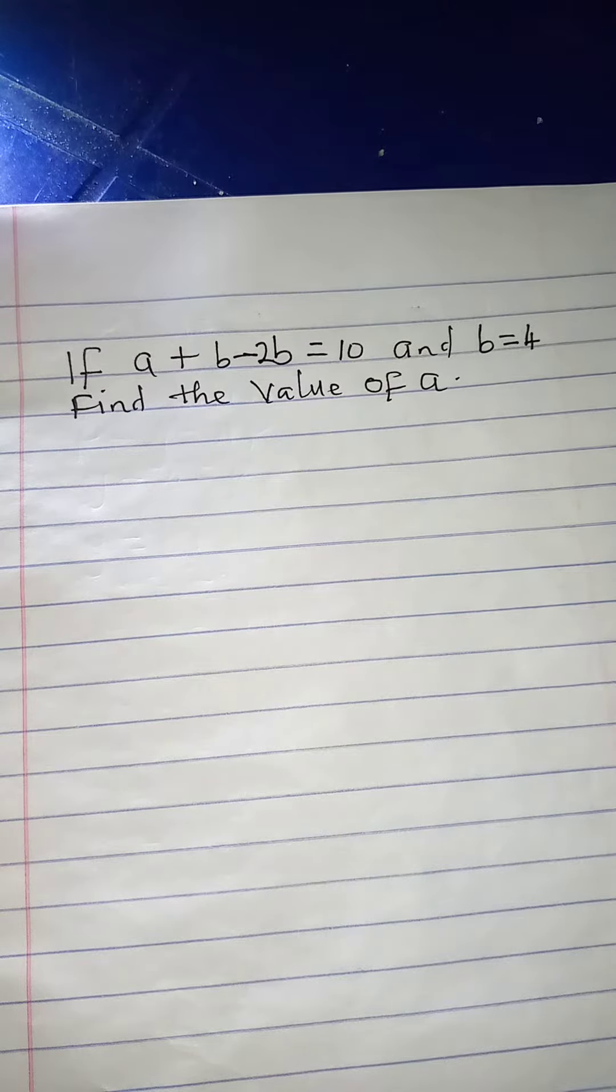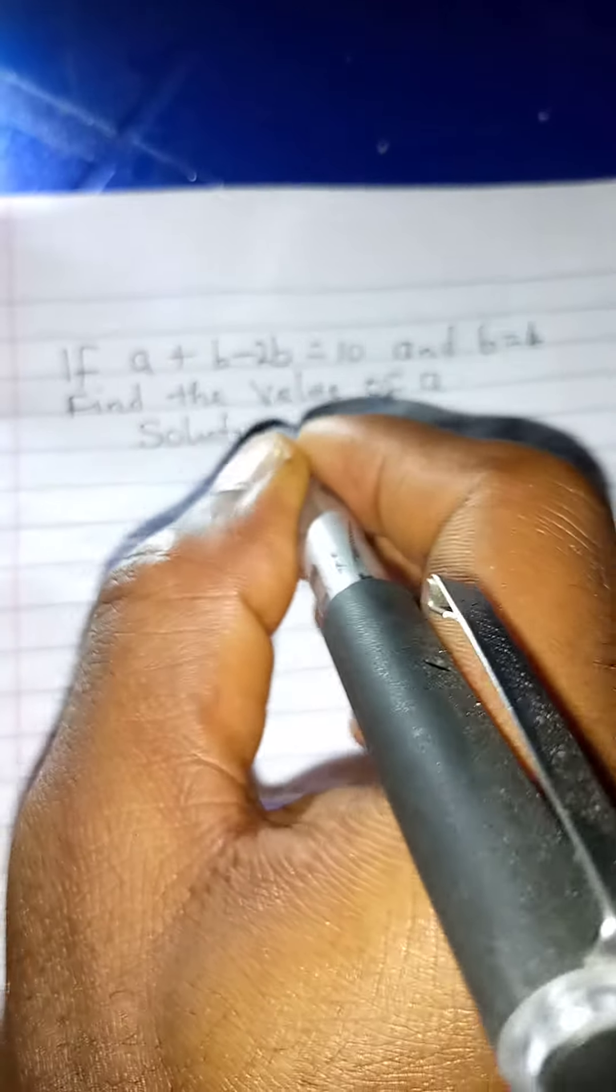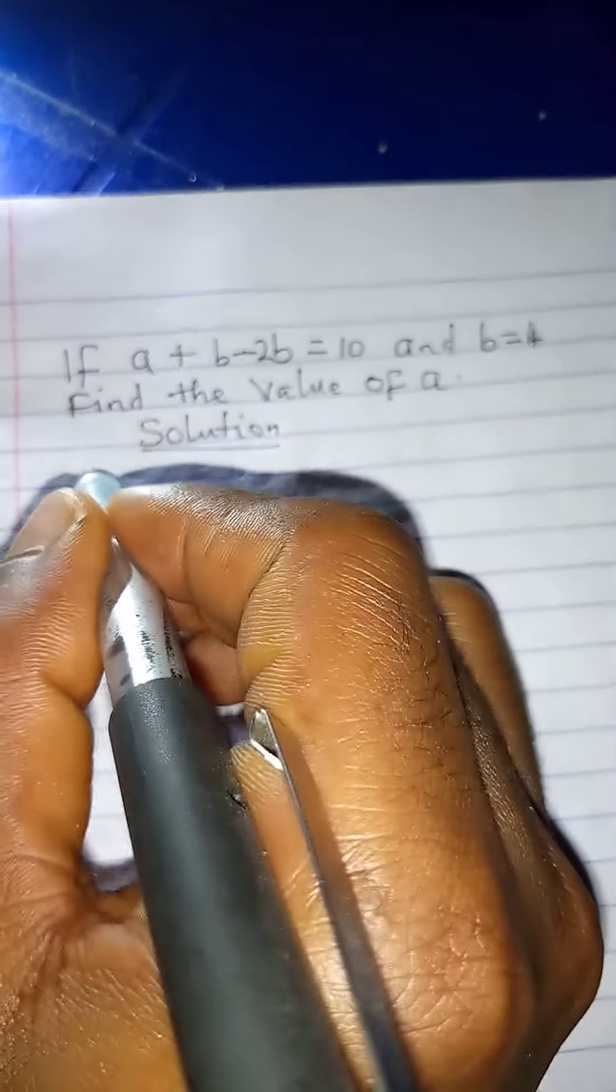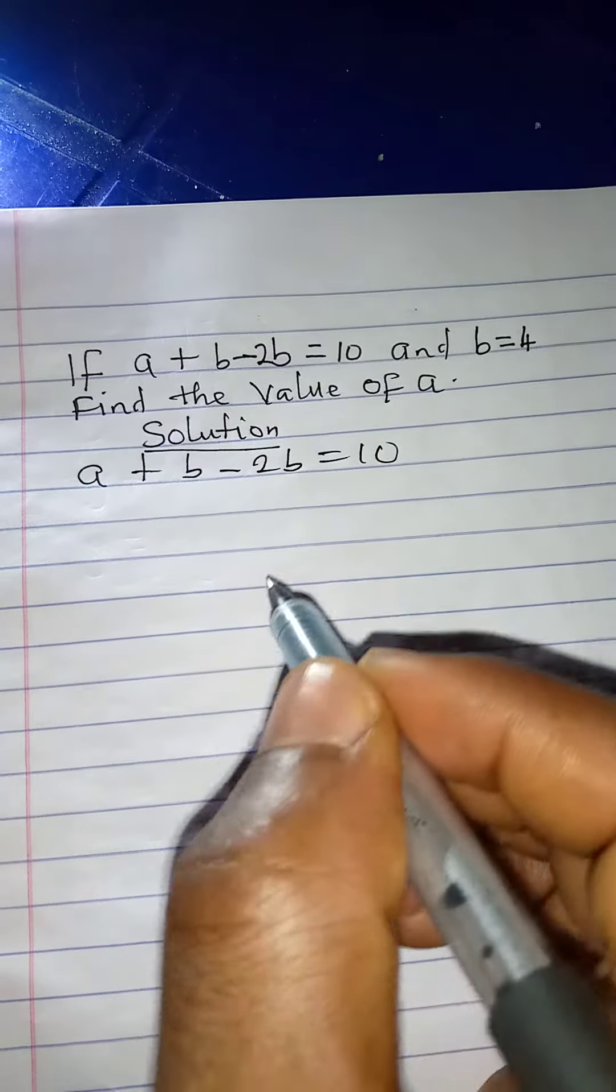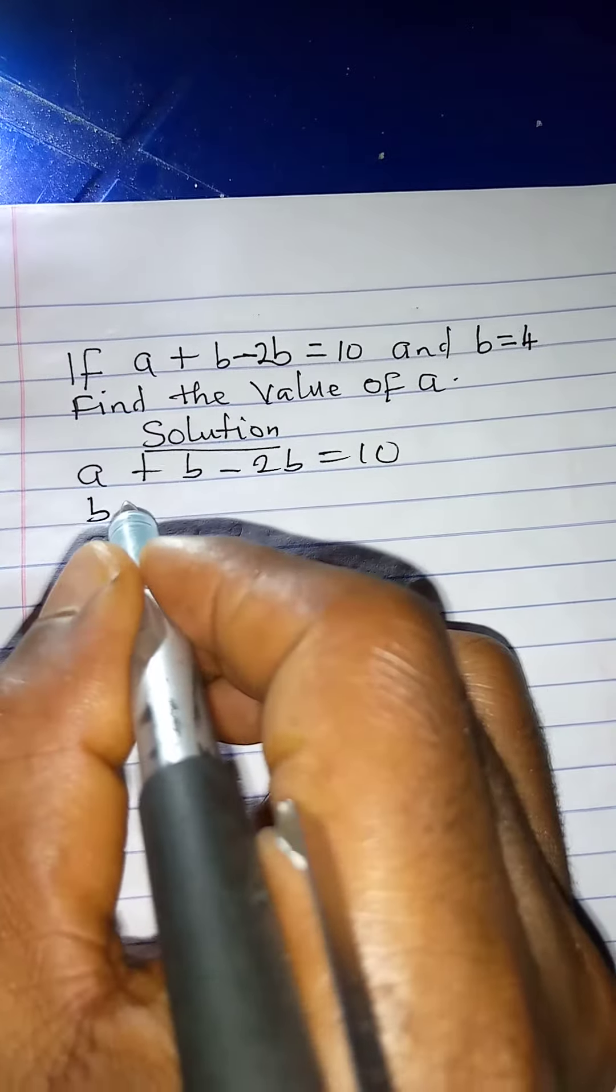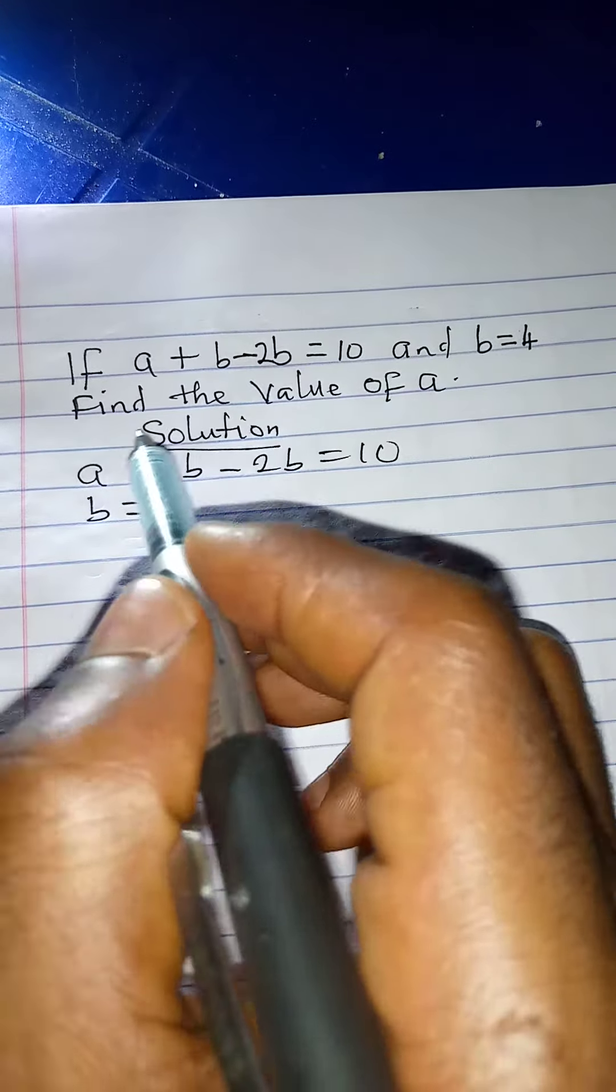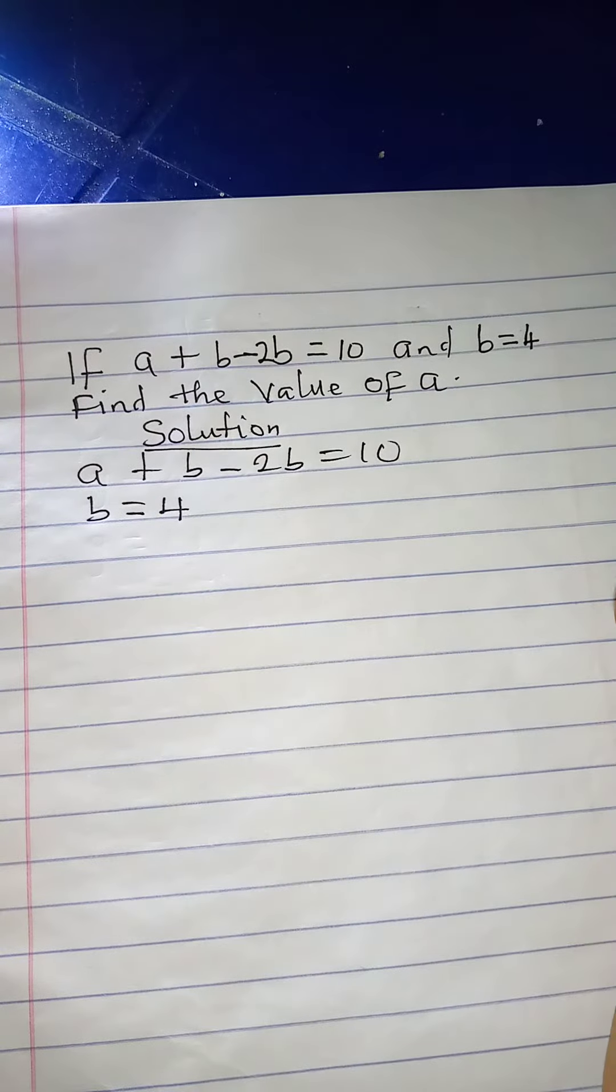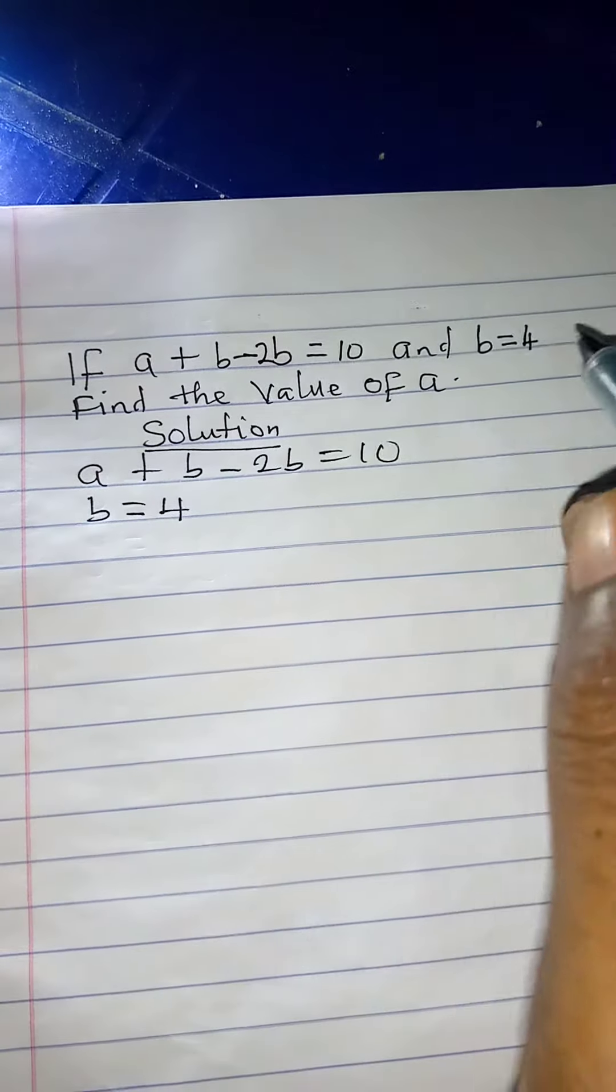Hello everyone, let's solve this simple problem. If a plus b minus 2b is equal to 10, and b is equal to 4, the question asks us to find the value of a. Remember, this is just substitution.